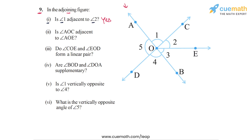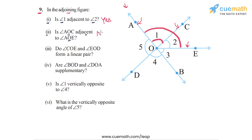In the second question: is angle AOC adjacent to angle AOE? Angle AOC is angle one, but angle AOE is the whole angle that includes it — so angle AOC is actually a part of angle AOE. Also, their non-common arms OC and OE are on the same side of the common arm OA. So these two angles are not adjacent, and the answer for part two is no.